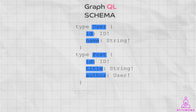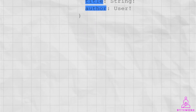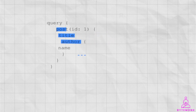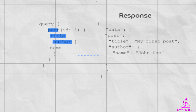You can use the schema to define any type of data you need — for example, products, orders, and customers. Once you have defined your schema, you can use it to validate requests and to generate responses. For example, if you receive a request to get a post by ID, you can use the schema to validate the request and generate a response containing the post data. The schema tells GraphQL that the request is valid and that the response should contain the post title and the author's name, and GraphQL will then execute the query and return the response.